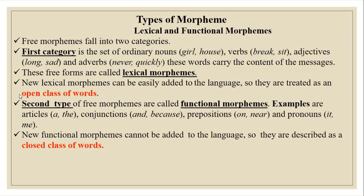The second type of free morphemes is called functional morphemes. Examples are articles like 'the', conjunctions like 'and', 'because', prepositions like 'on', 'near', and pronouns like 'it', 'me'. New functional morphemes cannot be added to the language, so they are described as a closed class of words, because we are not able to introduce new forms of functional morphemes.